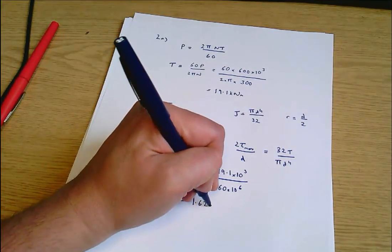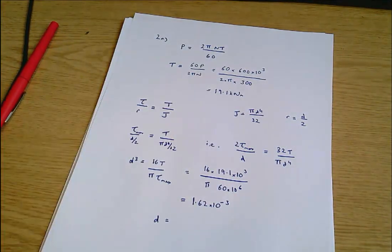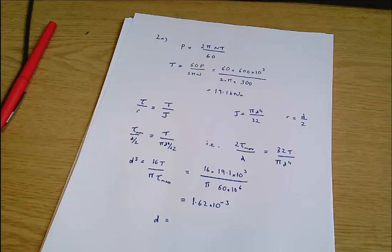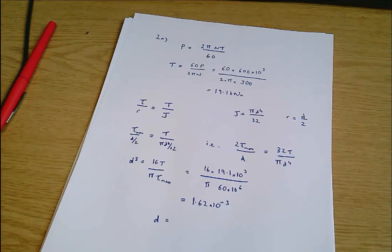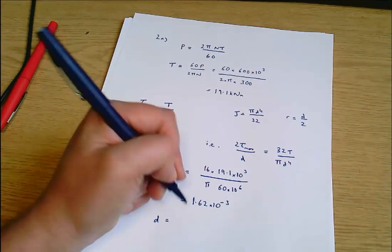That comes out to be 1.62 times 10 to the minus 3, which means that D equals, and make sure you know where the cube root button is on your calculator, D equals 0.1174 meters.